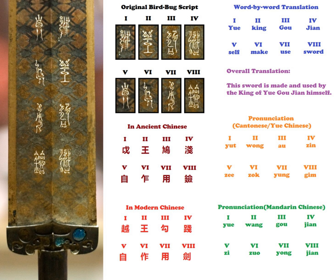There are two subcategories, or sub-styles. Bird seal script, known as Niao Zhuan or Niao Shu, is a style in which some parts of characters have a bird-like head and tail added. The bird-style sign is a combination of two parts: a complete seal script character and one bird shape.